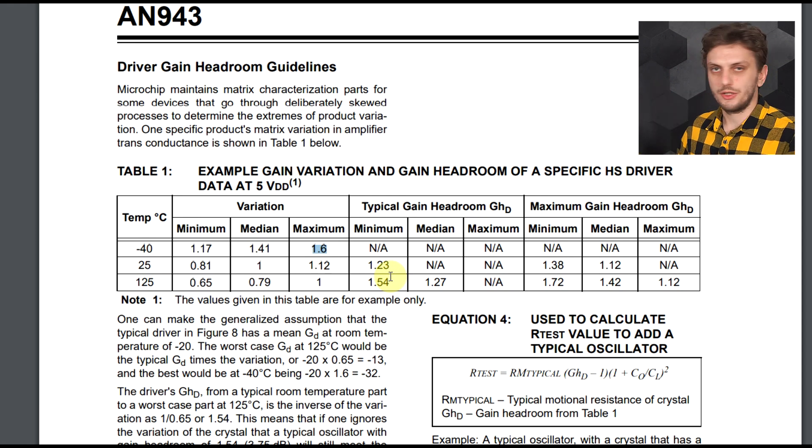Now of course these are just example values, whatever circuit you're working on will have completely different values than this. Maybe your temperature range is not minus 40 to 125, it's something smaller, so again the variation will not be this extreme. But this just goes to show what sort of values you should be expecting. So your gain will not vary by a factor of 100, but it can go to double and half of the initial value.